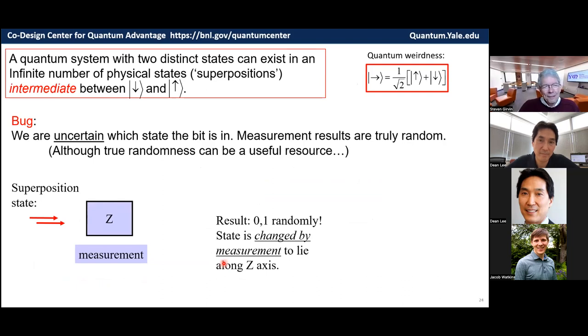Okay, well, so that's a feature, this superposition thing, but it's also a bug because we're uncertain which state the bit is in. When you measure whether it's zero or one, you can get random results, truly random. Well, that actually can be a useful resource. But, I mean, why would I want to build a computer where I don't know what the value of the bit is and I get random junk when I measure it? Well, that seems bad, so here's an example.